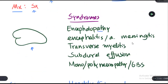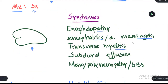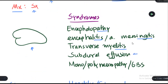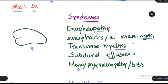In the nervous system, involvement can lead to encephalopathy, encephalitis, and aseptic meningitis. There can be inflammation of the spinal cord known as transverse myelitis, and sometimes inflammation can lead to subdural effusion. There can also be involvement of the peripheral nervous system such as mono- or poly-neuropathies, and classically Guillain-Barré syndrome (GBS).